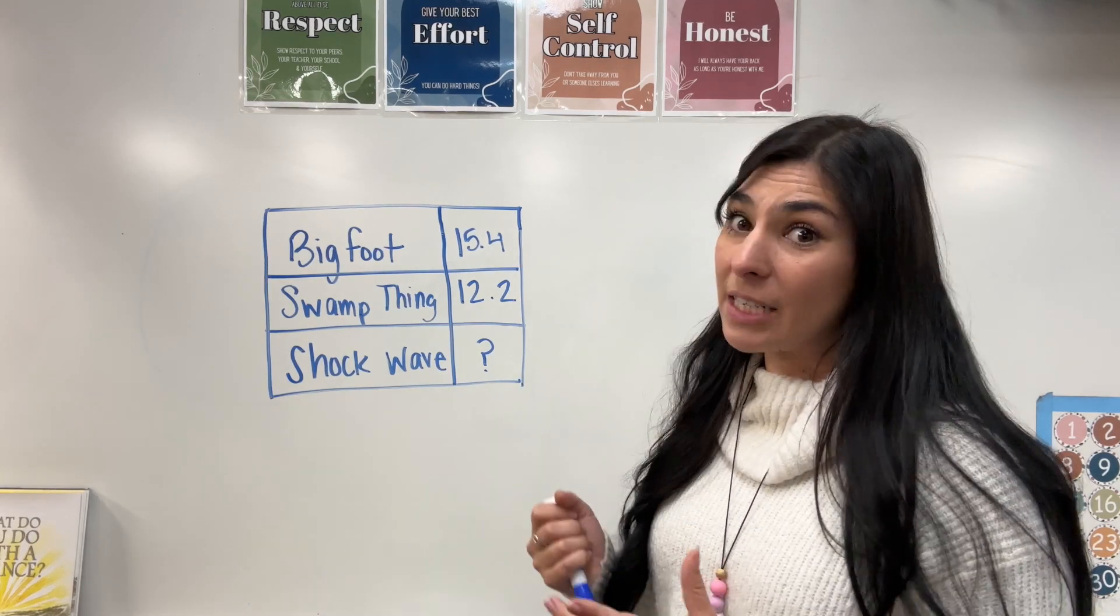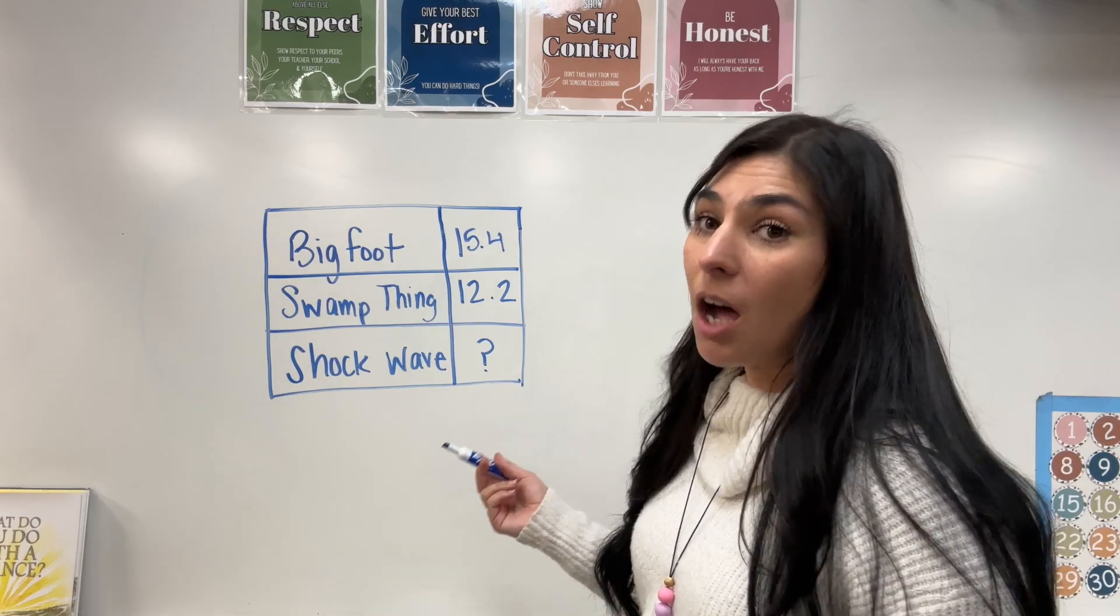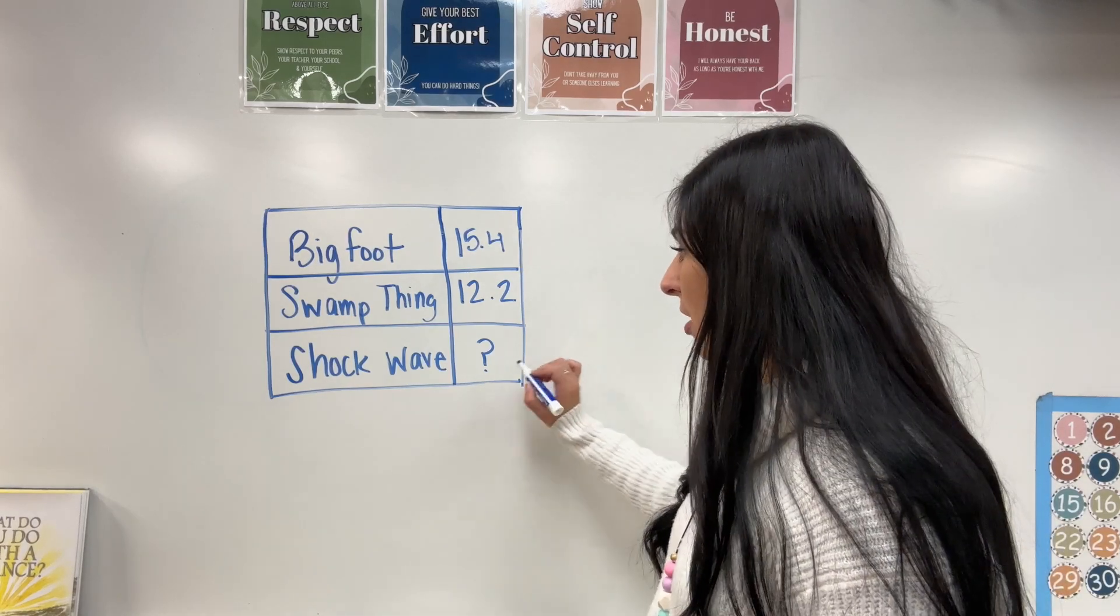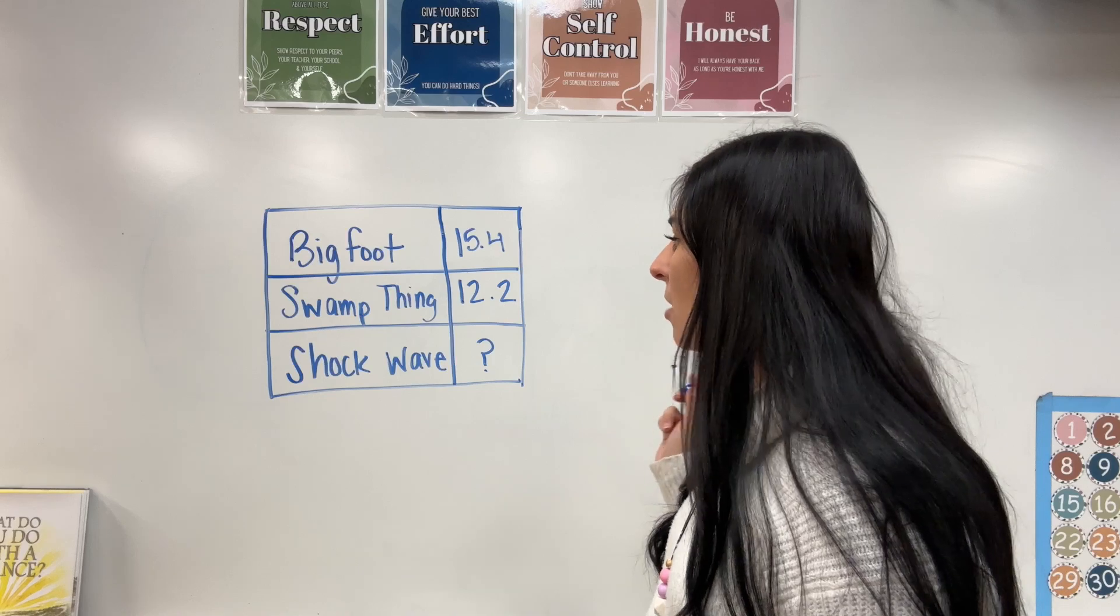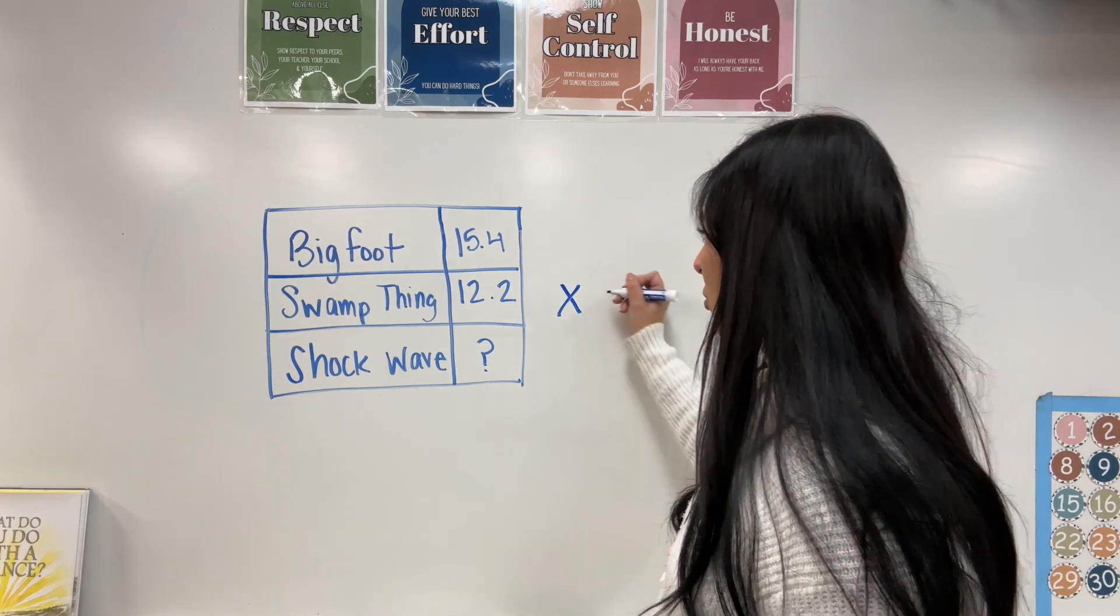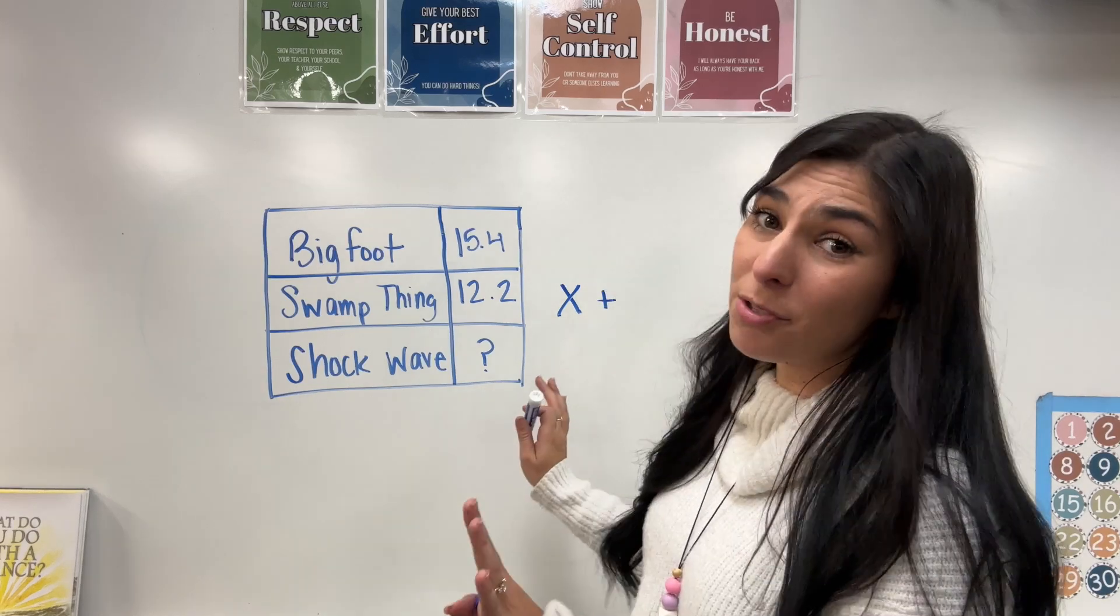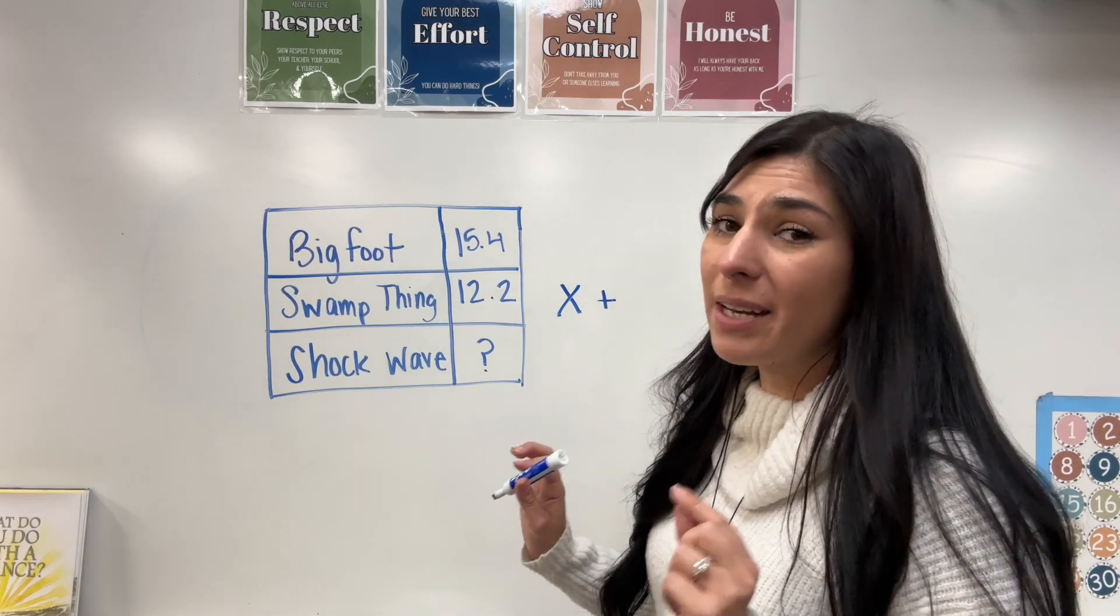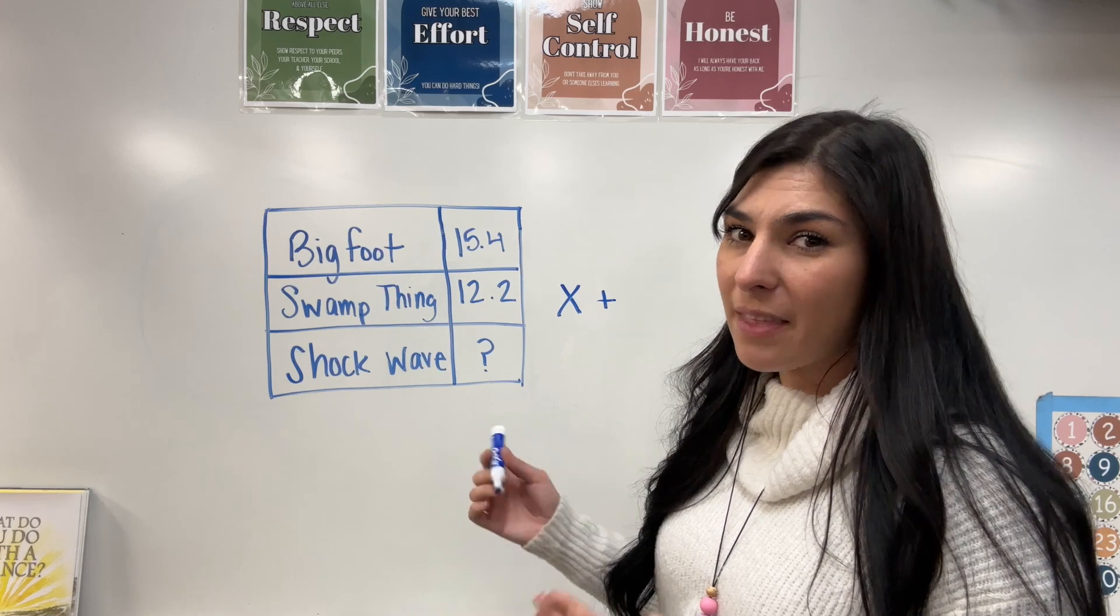So in order to make this an addition equation, I need to think of the unknown value. So I know shockwave is my unknown value. So I have x. It said it wanted an addition equation.